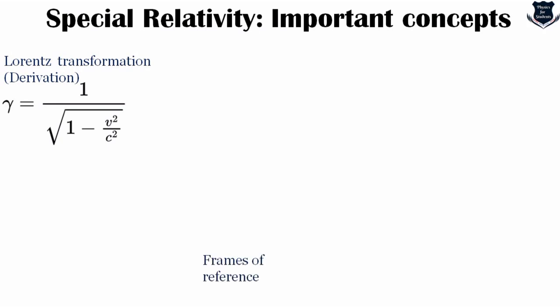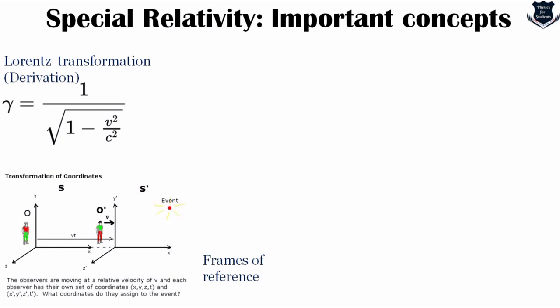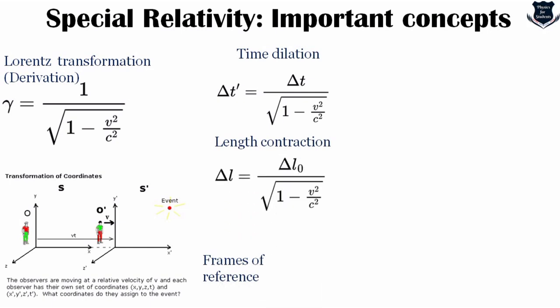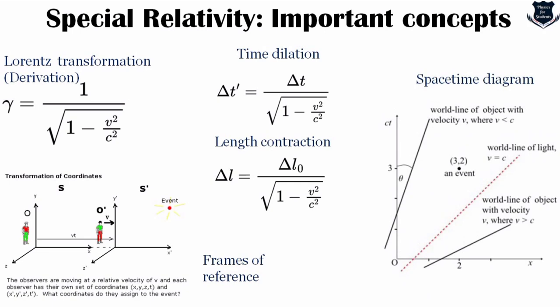Next is frames of reference: you need a complete, thorough, and clear imagination of what is happening in each frame. Then comes time dilation — in physics and relativity, time dilation is the difference in elapsed time as measured by two clocks, either due to relative velocity between them (special relativistic kinetic time dilation) or due to a difference in gravitational potential between locations. When unspecified, time dilation usually refers to the effect due to velocity. Next is length contraction and spacetime diagrams.